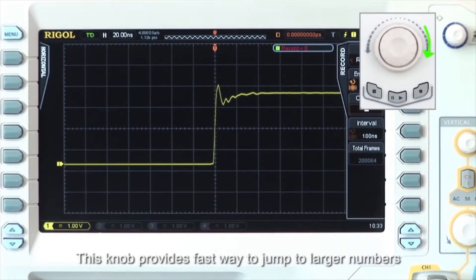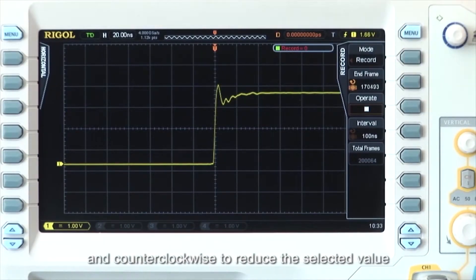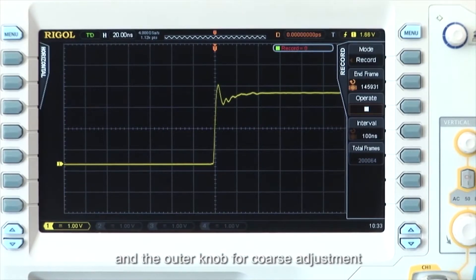This knob provides the fastest way to jump to larger numbers. Turn the knob clockwise to increase and counterclockwise to reduce the selected value. Note that the inner knob is used for fine adjustment and the outer knob for coarse adjustments. More rotation on the outer knob increases the rate of change of the selected value.